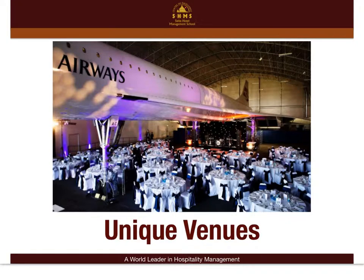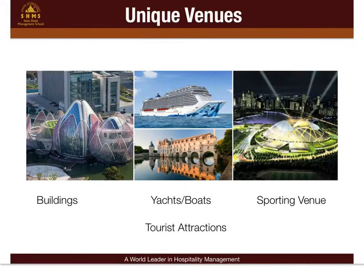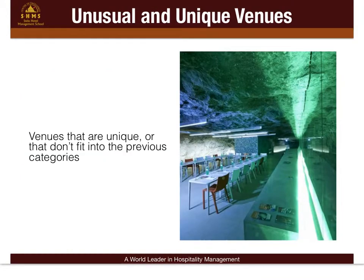There are other very unique venues, such as buildings, yachts and boats, tourist attractions, and even sports venues. Venues that are unique don't fit into the previous categories — for example, the salt mines of Bai. Other examples include golf courses, museums, theatres, television studios, castles, wine cellars, and many others.